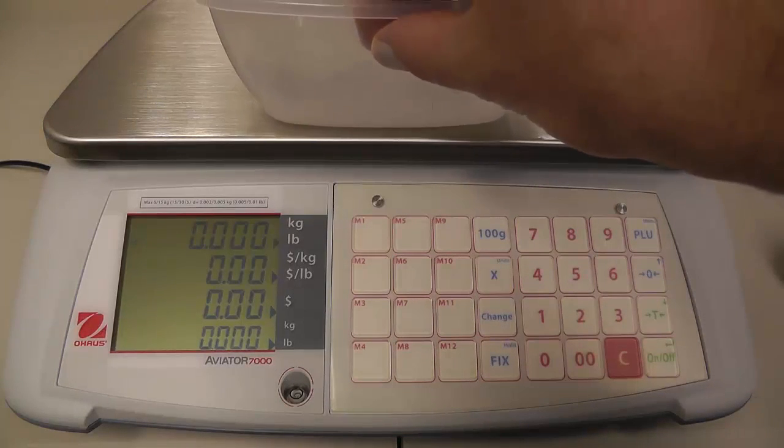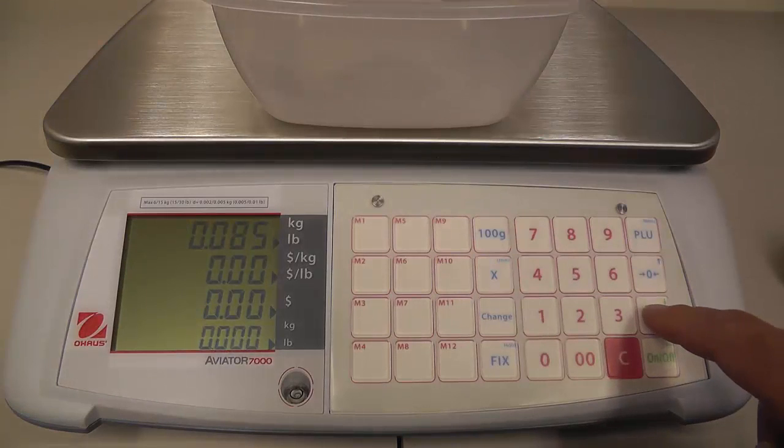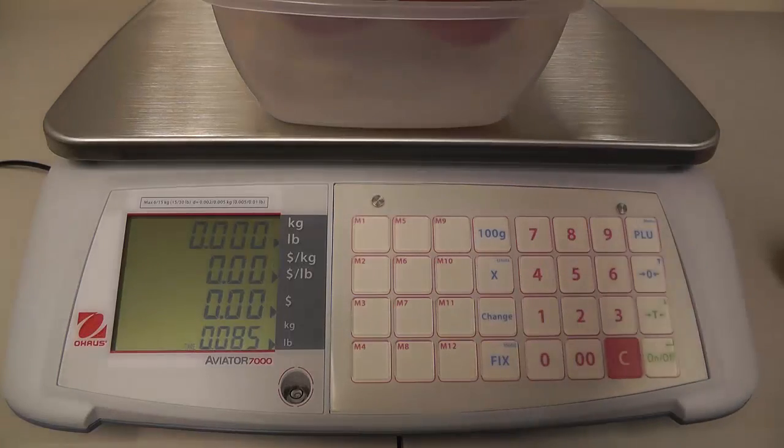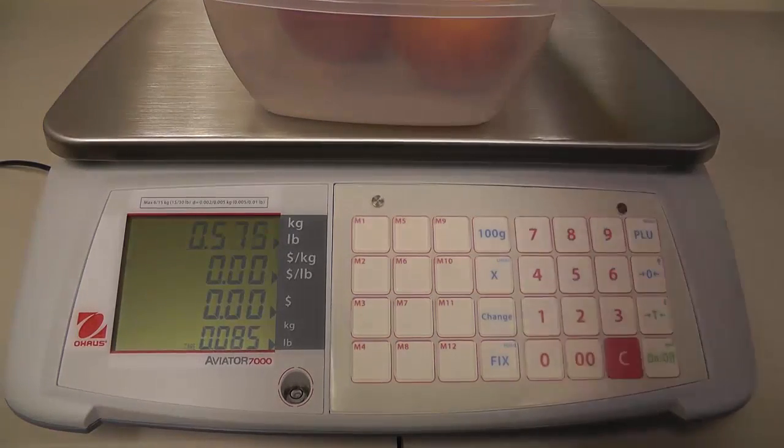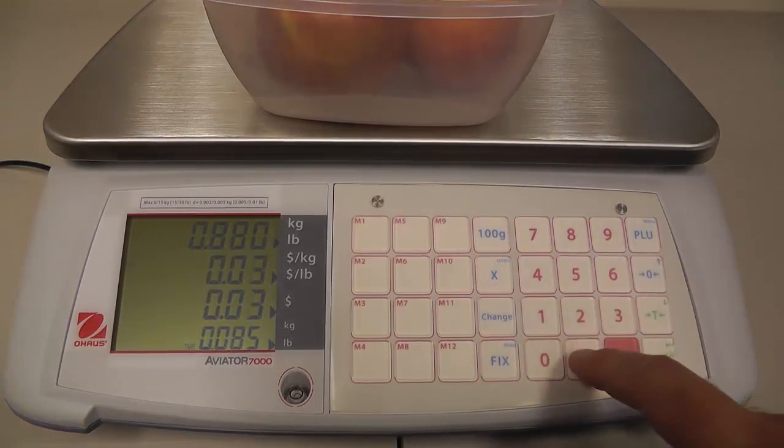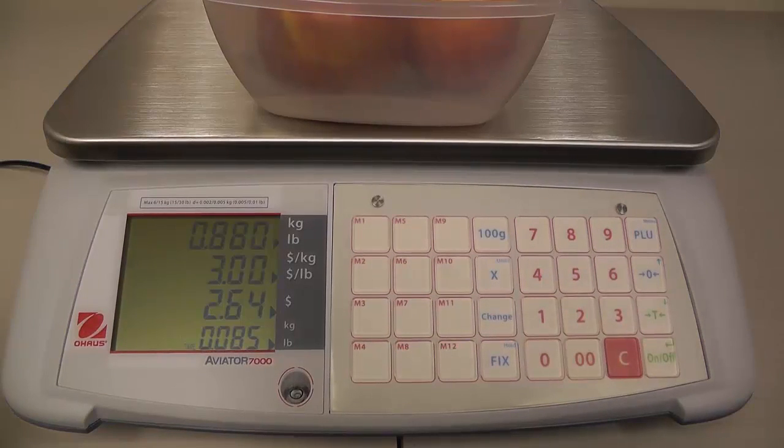Let's take a look at the example. We'll just put a container on the scale and we'll tare that off. We'll put our three apples in here and we'll say they're three dollars a pound. Then we're going to press the fix key.